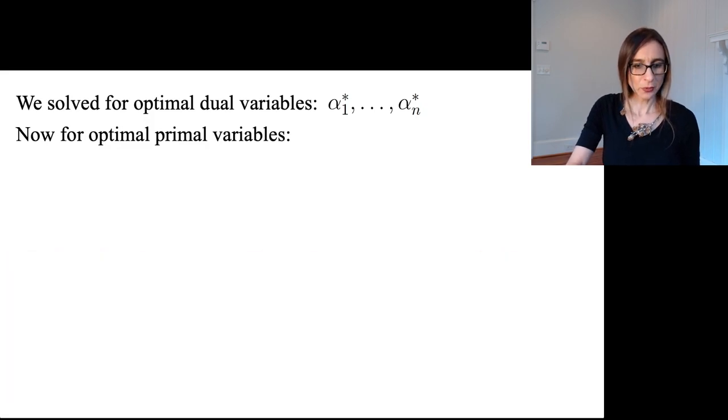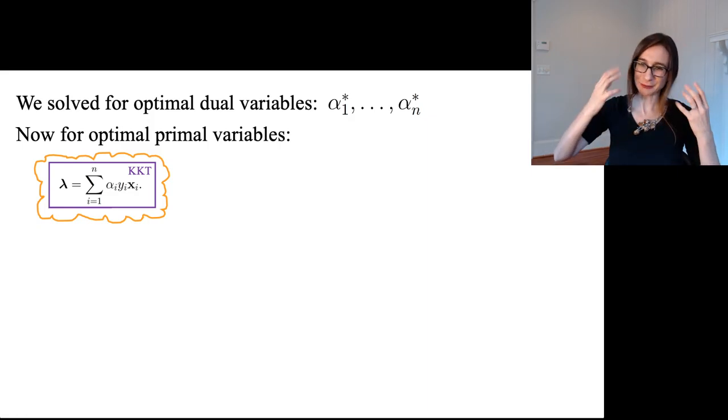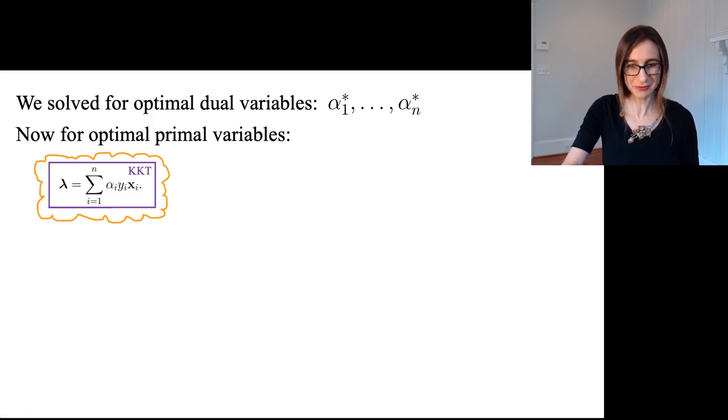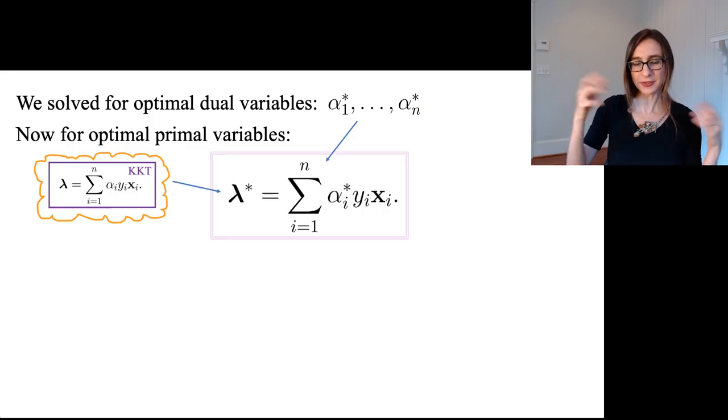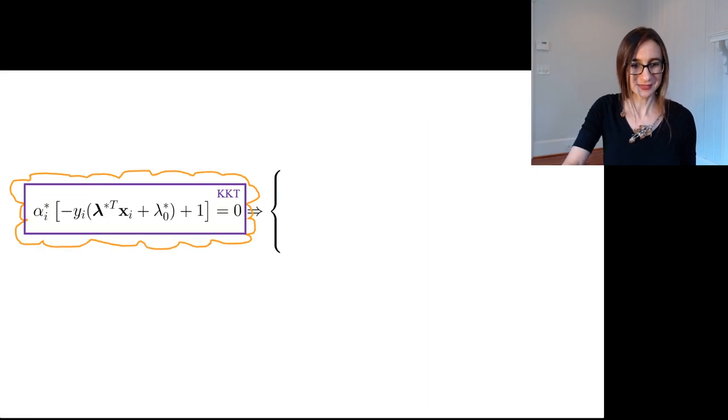So why do we do that? Well, we're going to use one of the KKT conditions. And in particular, this one comes from Lagrangian stationarity. I've just put it in a thought bubble because I'm remembering from the last video what that condition was. So as it turns out, if you know what the alpha stars are, you can just put them into this KKT condition to get the lambda stars. You have now the optimal lambdas. And now we also need to find the optimal values for the intercept terms. But before we do that, there's something cool I want to show you.